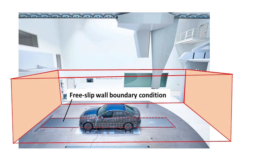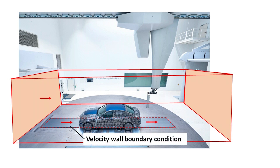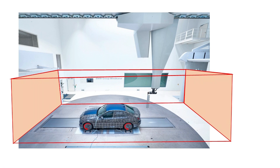Additionally, there is another way to achieve the same result. In CFD, we can also impose a translational or rotational velocity on a wall. In this particular case, we can assign a velocity equal to the inlet velocity on the boundary of the moving belt. Therefore, no velocity gradient will form on the moving belt surface since its velocity is zero relative to the air. The velocity boundary condition is also applicable to the rotating wheels — we can assign the same angular speed on the surface of the wheels in CFD to simulate the rotating wheels.